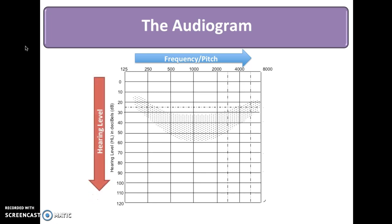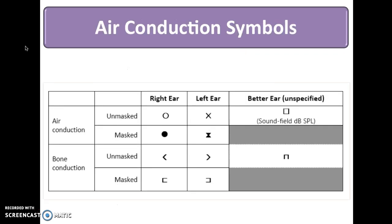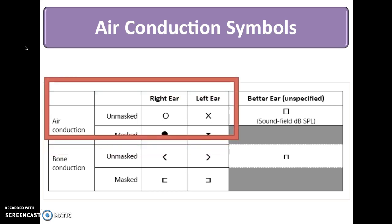On the vertical axis, we have hearing level, represented in dB or decibels. There are two symbols that we'll be talking about today, and that's the right and left ear air conduction symbols — the circle and the X.